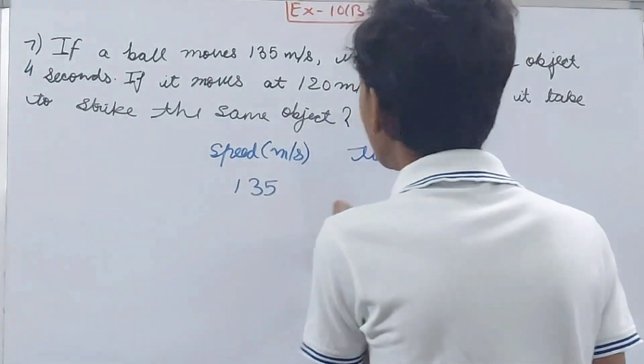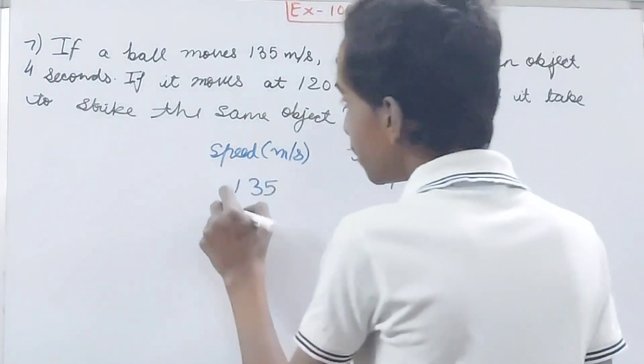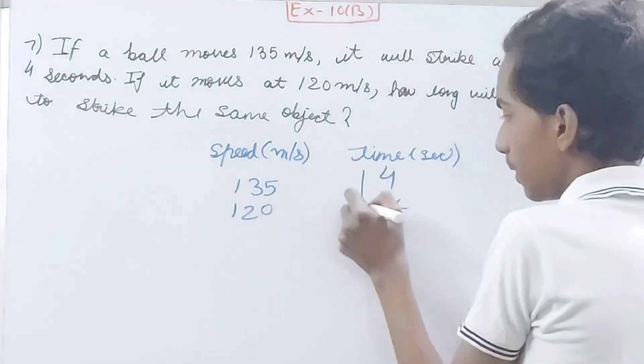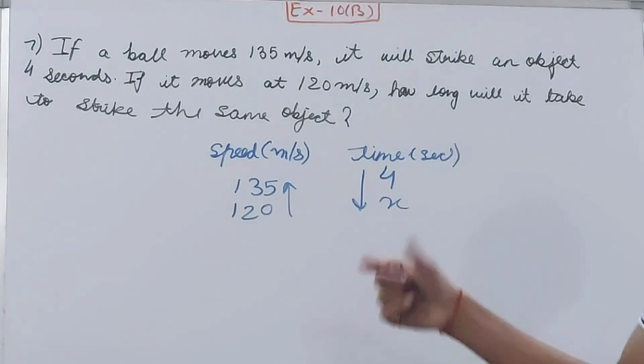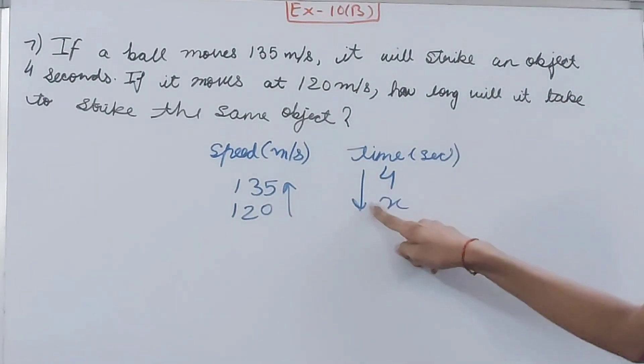Make this arrow, this arrow. This we all know, right? Inverse variation. Speed and time are inversely proportional. One will be facing x, another will be to the opposite direction of x.